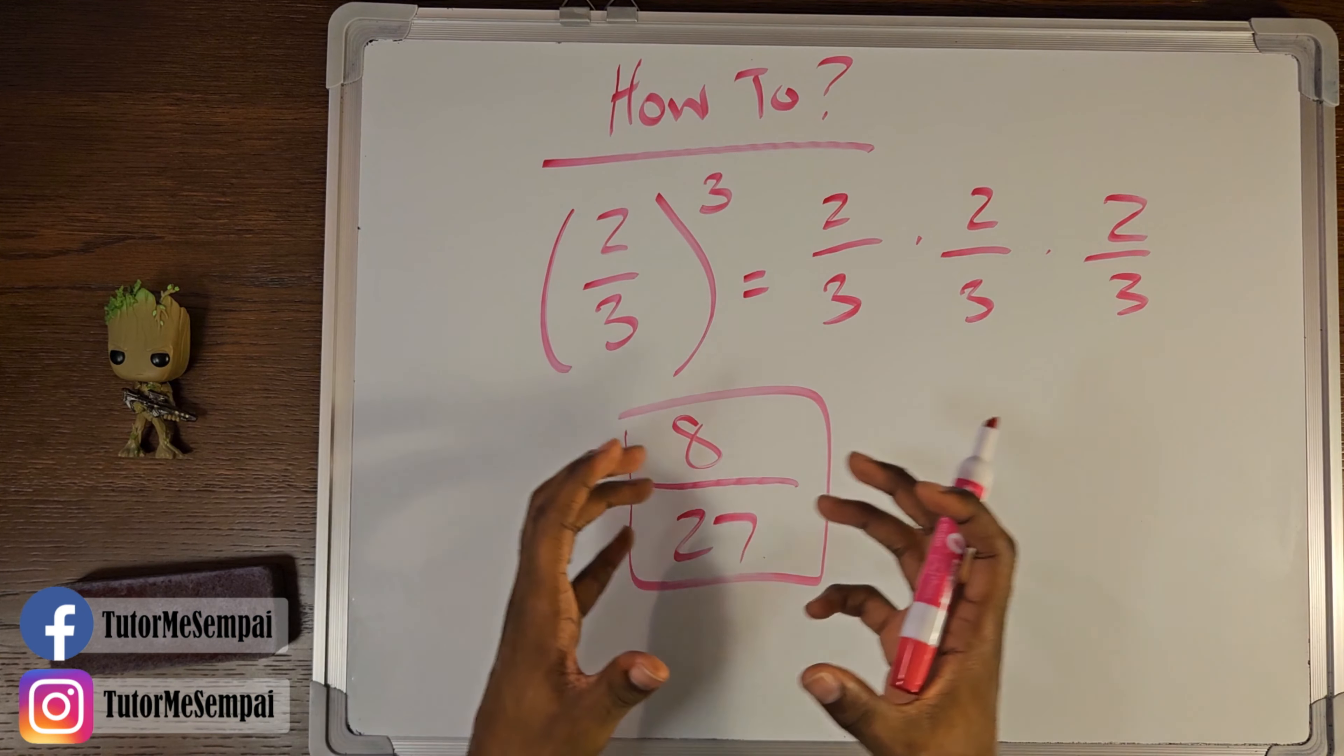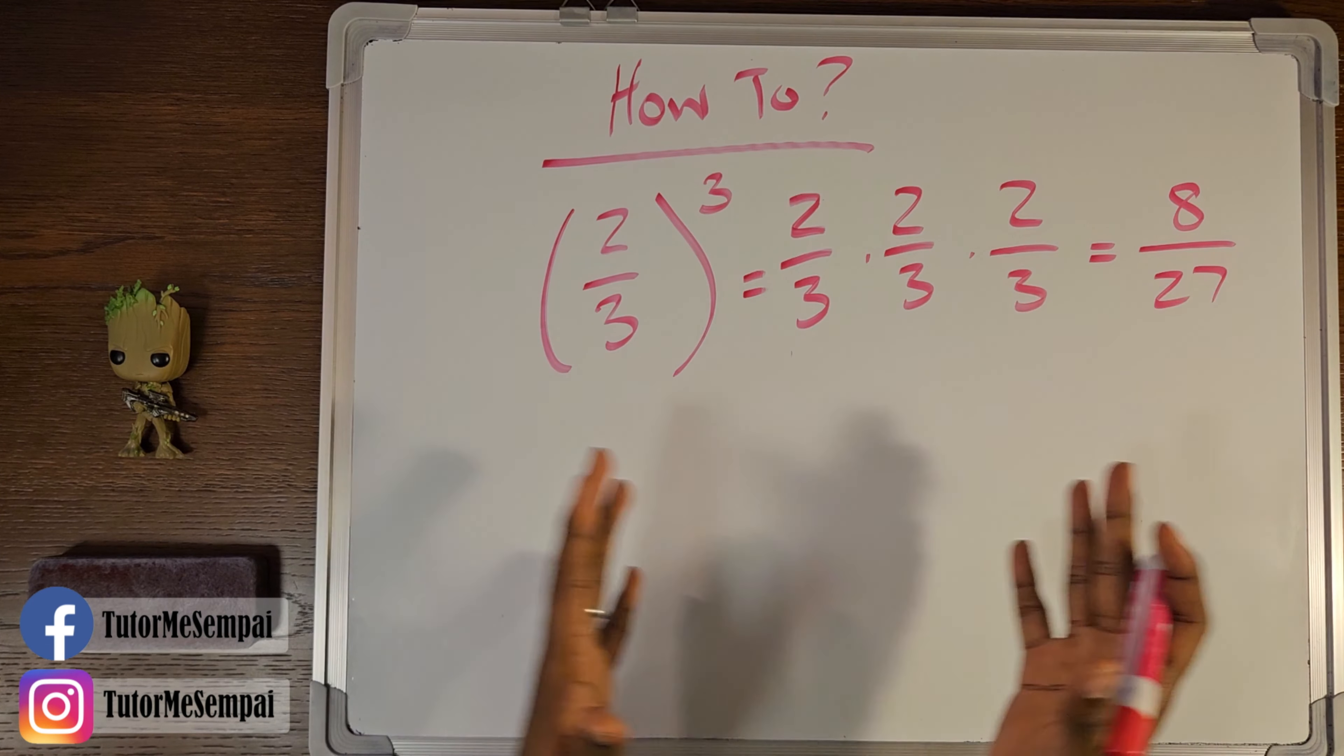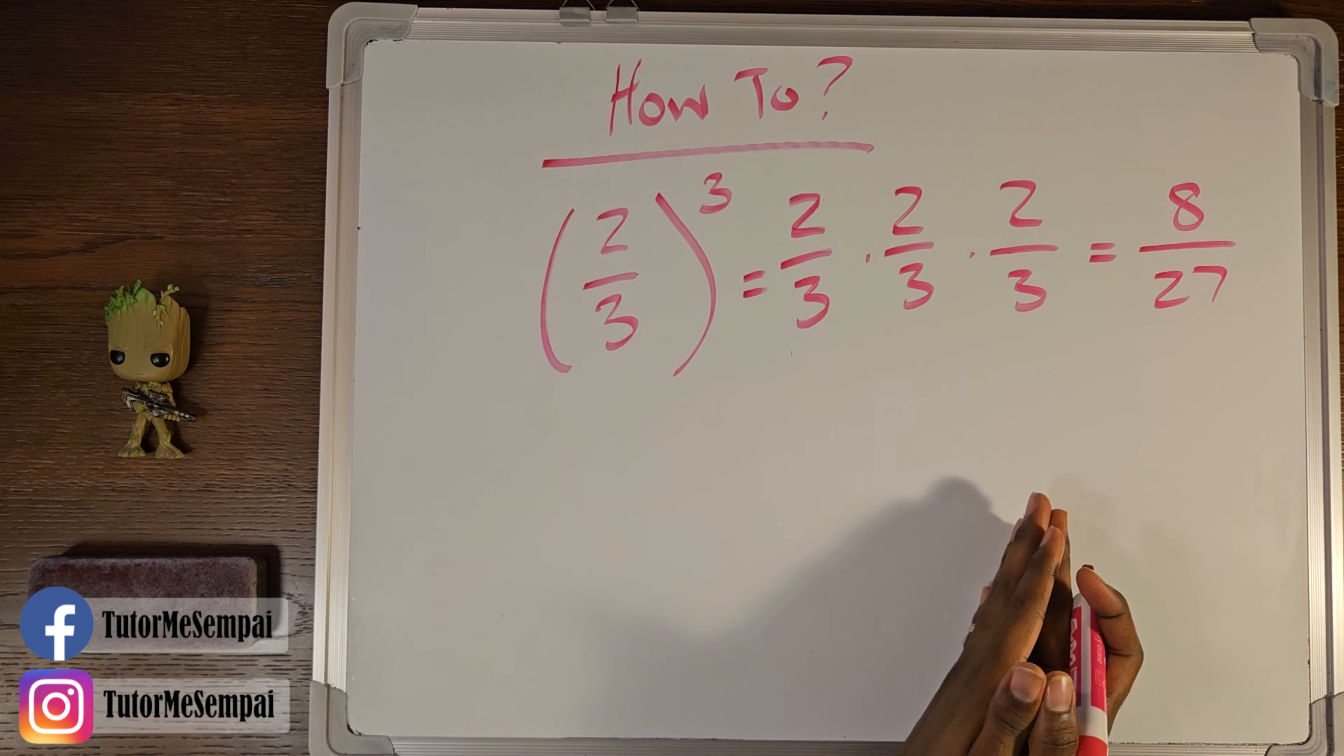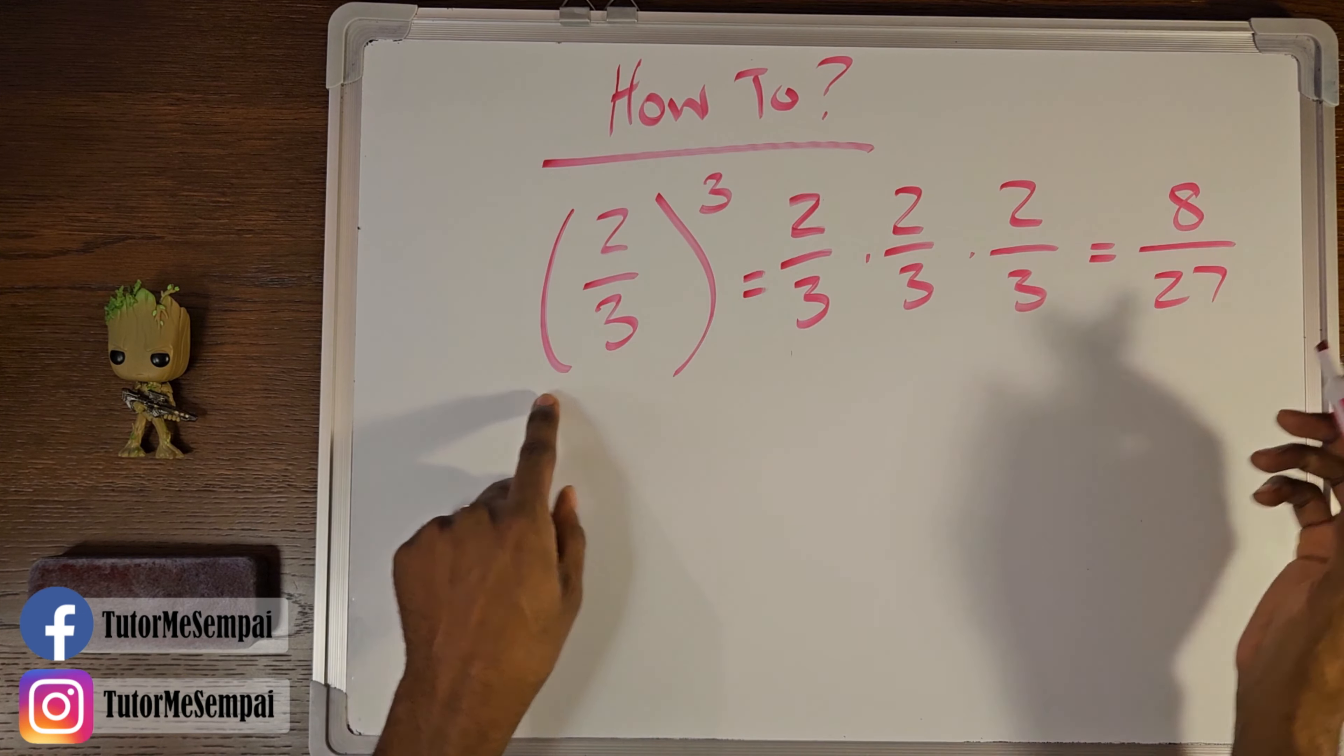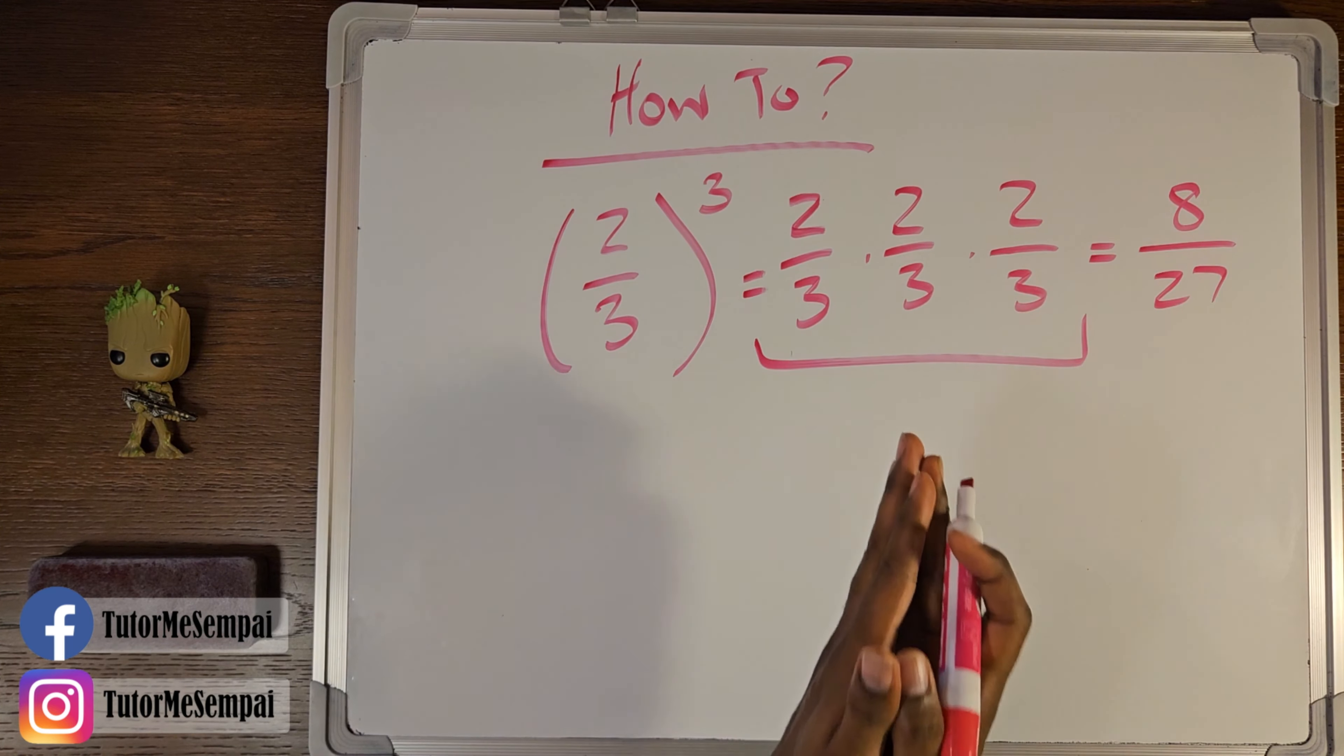However, we have a more condensed way of doing this and we can still get that same answer. So I've rewritten what we just did and I put it all in one line because we're going to actually use this to help us figure out that more condensed way. So we started with two thirds raised to the third power and we ended with 8 over 27. However, this was our middle step.